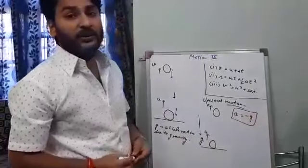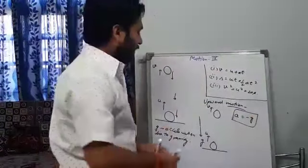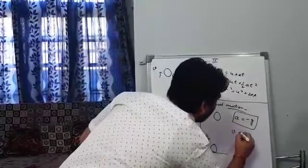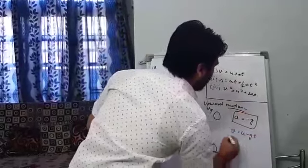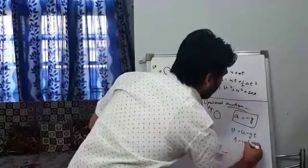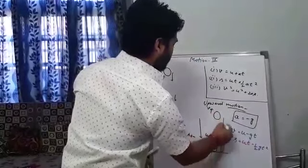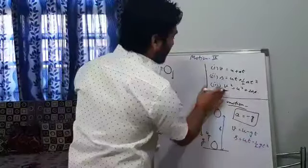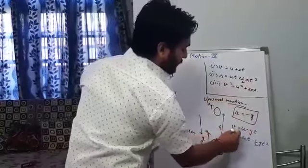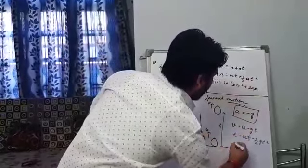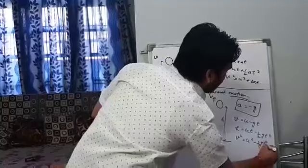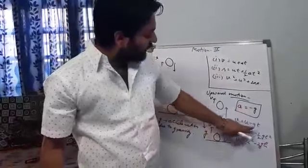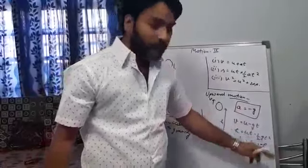So our equations will become: first equation V equals to U minus GT. In the place of A I am placing minus G. Second equation: H equals to UT minus half GT squared. If this is the height H, then in the place of displacement S I am writing H. And the third equation: V squared equals to U squared minus 2GH.